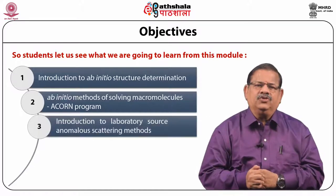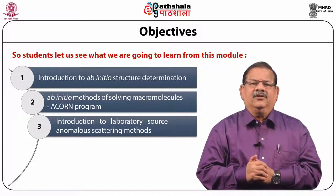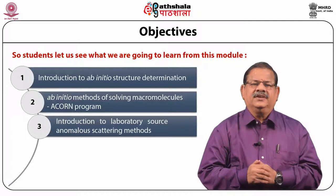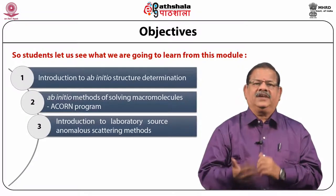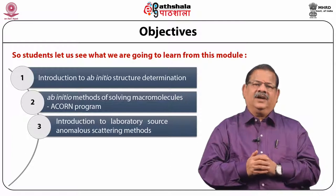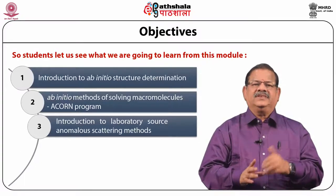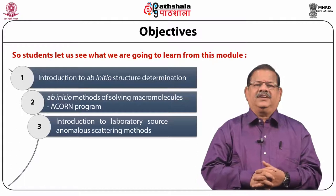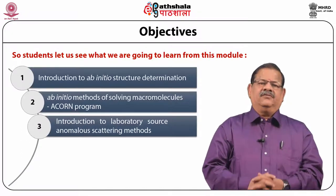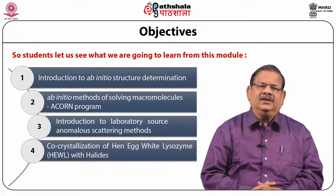Then I am going to introduce you to the Laboratory Source Anomalous Scattering Methods. What is the significance of this method? Usually, for pronounced anomalous scattering and for quick data collection, people have to go all the way to synchrotron sources in various countries and spend time to collect data at a wavelength where the anomalous scattering of the heavy atom is more pronounced. We are going to show you how you can mimic the same thing with certain anomalous scatterers using lab source facilities to solve macromolecular structures. We are going to consider the co-crystallization of hen egg white lysozyme, HEWL, with halides.